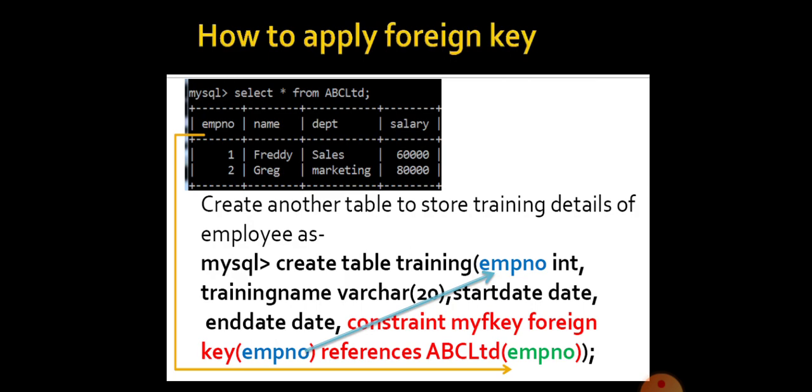How to apply foreign key into a table? As we all know, foreign key is used for the relationship between two tables. As we created a table earlier, that is ABC Limited, here we are trying to create another table called training.